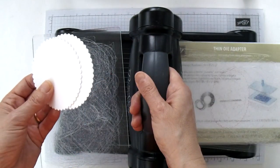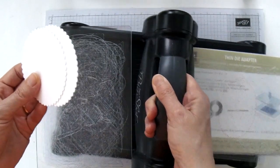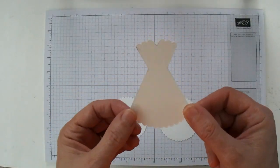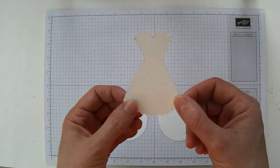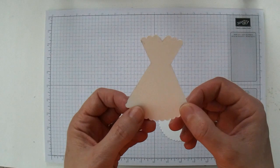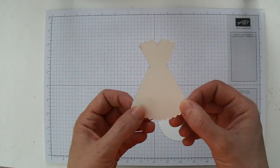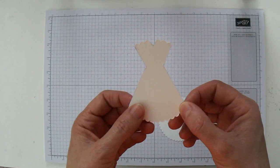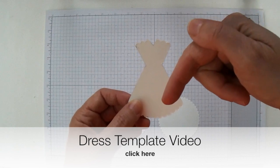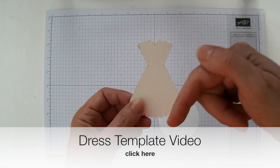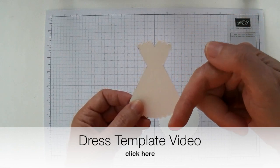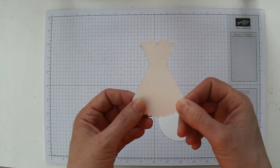I'm just going to set my Big Shot aside for a moment while we cut out the dresses. So here I have the template that we're going to use to cut out the dresses. I did a video tutorial on how to make this dress template. So if you look down below right here, just click on that link and that's going to take you to the video that shows you how to make this dress template.